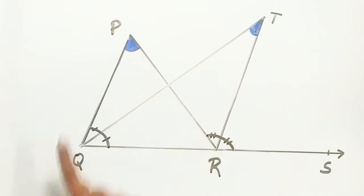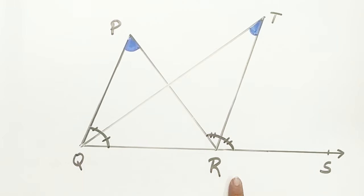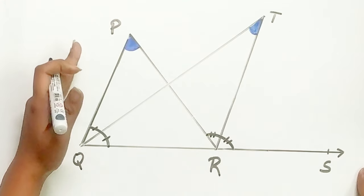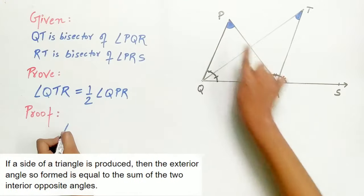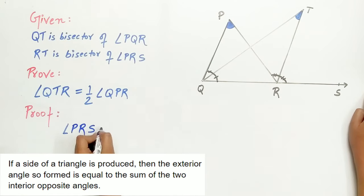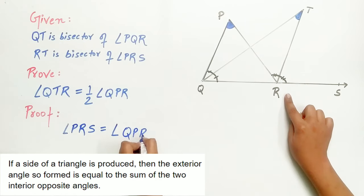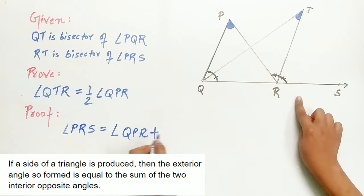Now look carefully. In triangle PQR, angle PRS is an exterior angle. Hence, it is equal to sum of two interior opposite angles. Angle PRS equals angle QPR plus angle PQR.